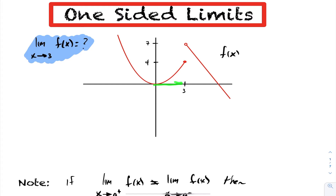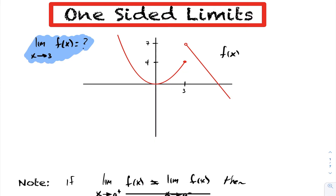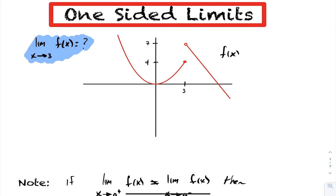As I approach 3 from the left-hand side, you can see that my function is approaching 4. However, as I approach 3 from the right-hand side, we see that my function is approaching the value of 7. So because of this jump or break in the graph, we have here a point of discontinuity. So this function is not continuous. So evaluating the limit at 3 becomes a question.